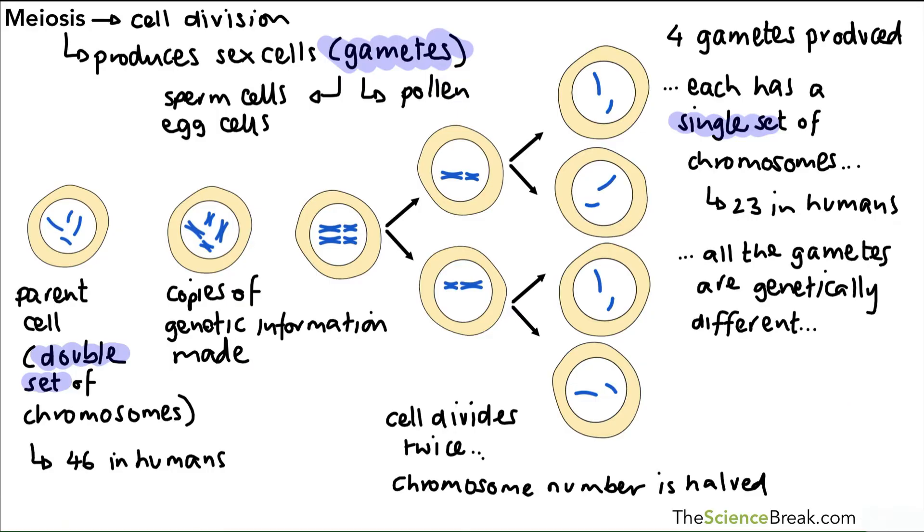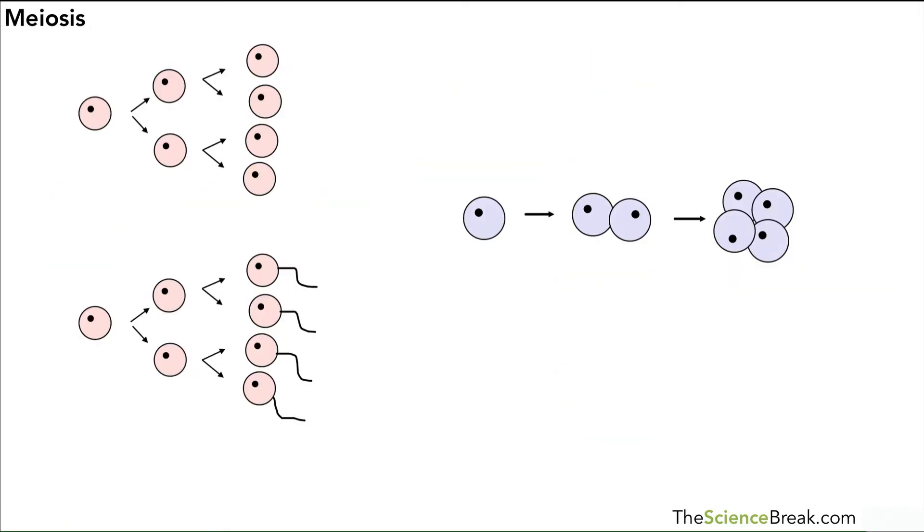We can look at what happens next. We've got sex cell production - egg cells produced by females in the top diagram, and sperm cell production in males in the bottom diagram. Both are produced by the process of meiosis in males and females.